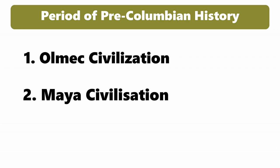2. Maya Civilization: The Maya civilization lived in southern Mexico and Central America from around 2000 BCE to 1500 CE, and was noted for its superior mathematics, calendar system, and architectural achievements.